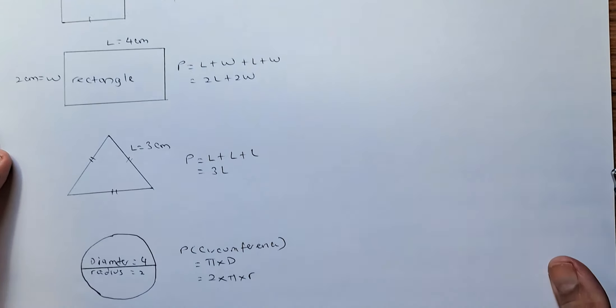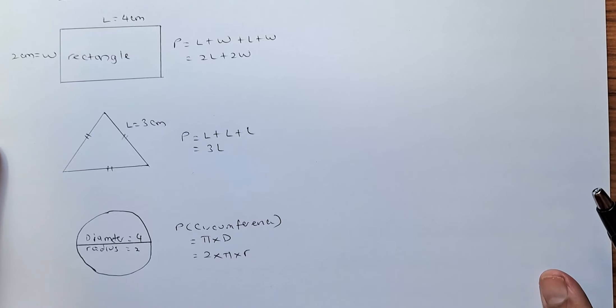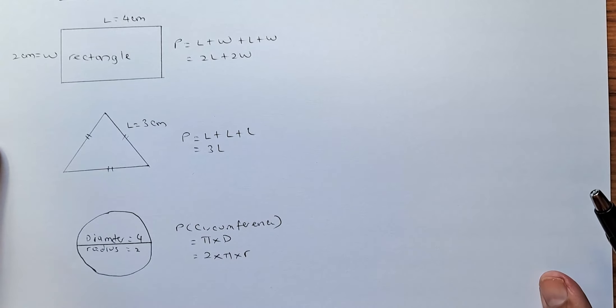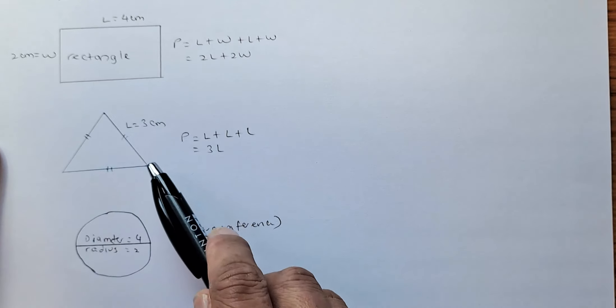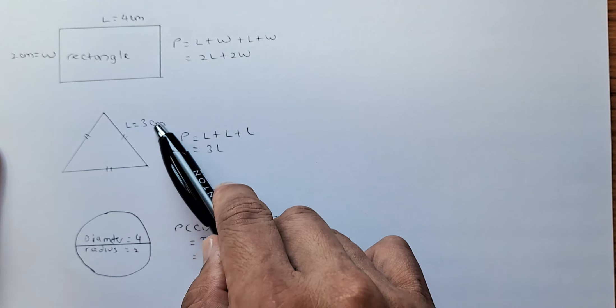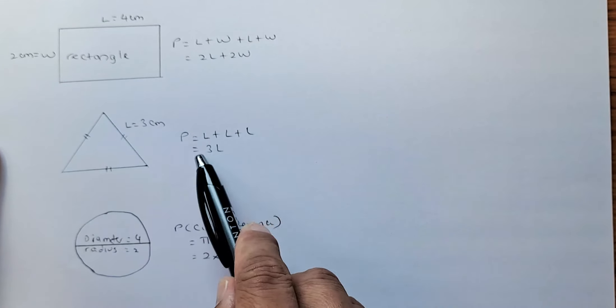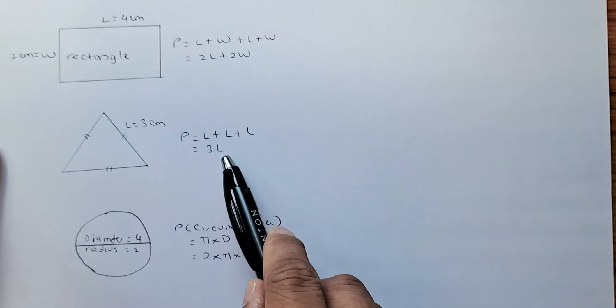For a triangle — this is an equilateral triangle where all the sides are the same. If one of the lengths is three centimetres, it's going to be three plus three plus three, or three times three. The answer is nine centimetres.